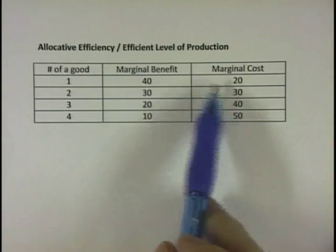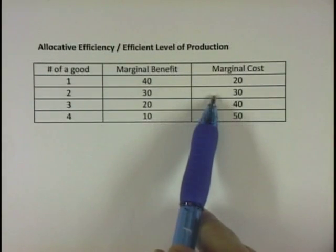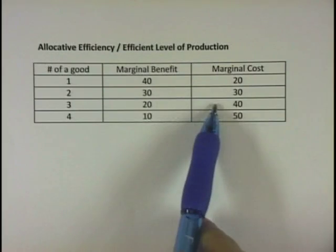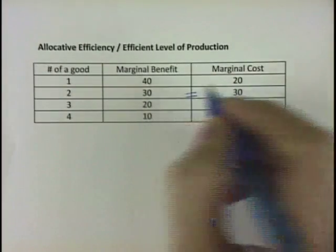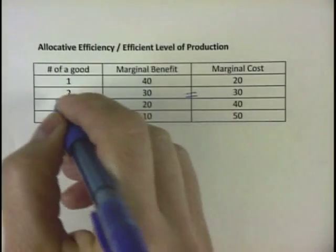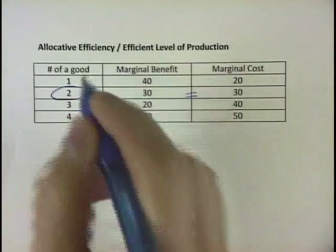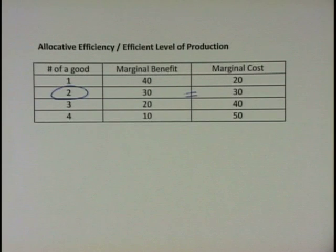To find the efficient level of production, we want to find where marginal benefit is equal to marginal cost. It's not equal at one unit, but it is equal at two. It's not at three, it's not at four. So the allocative efficient level of production for this economy would be two units — that's where marginal benefit equals marginal cost.